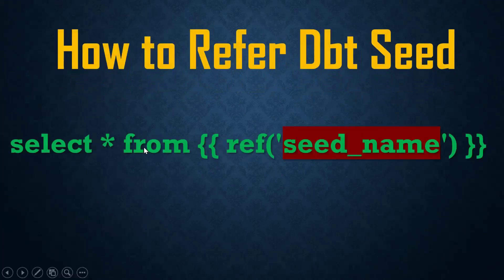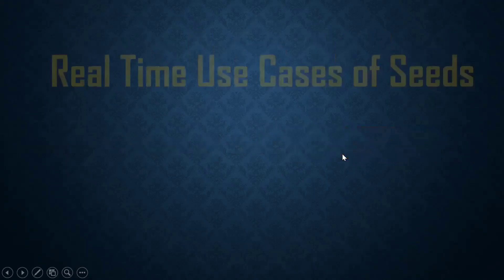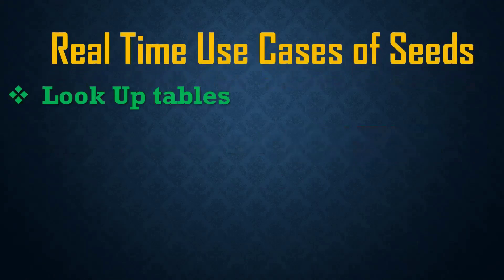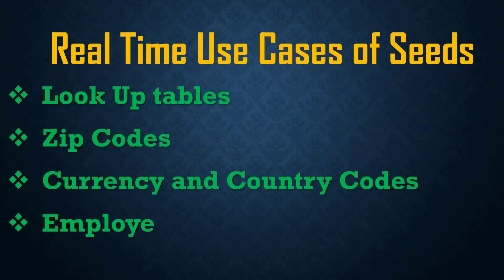How to refer to a dbt seed in a model? Seeds can be referenced using the Jinja ref() function — that is, select star from ref('seed_name'). The seed name is the CSV file name without any extension — you should not include the .csv extension.